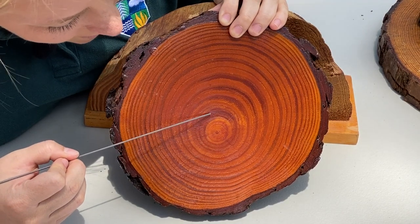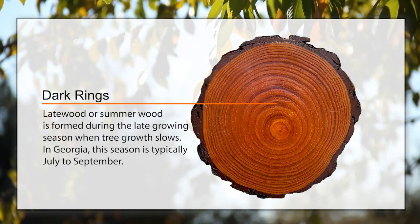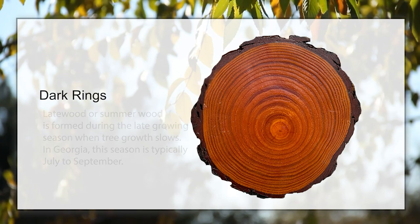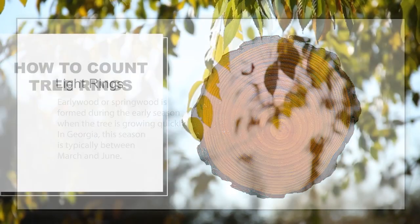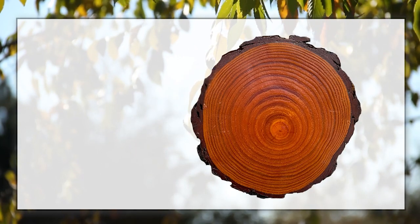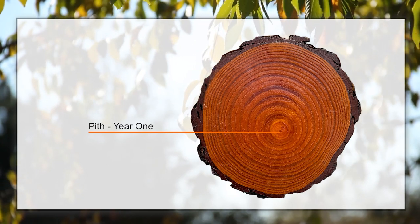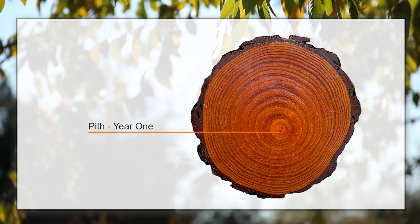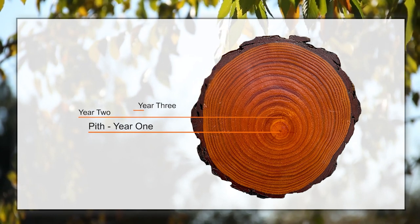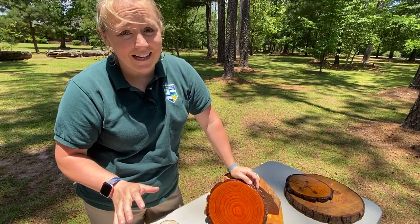Looking at the tree cookie here you'll notice that we have dark rings. The first thing we want to do is find the little center dot — that's called the pith, and that's where we're going to begin counting. This is going to be year one for our tree. It's easier to count the dark rings. So we have year one right at the center, then two, three... sixteen, seventeen, eighteen. This tree is roughly 18 years old.